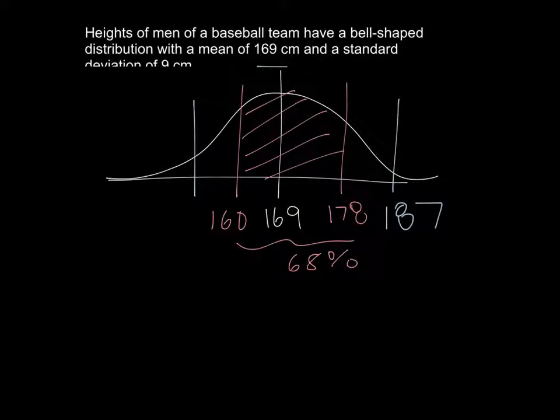So that was found by 169 plus 2 times 9. Then I would do 169 minus 2 times 9, that would give me 151. Now if I want to find three standard deviations, I take 169 plus 3 times 9, so that'd be three standard deviations, which gives me 196.